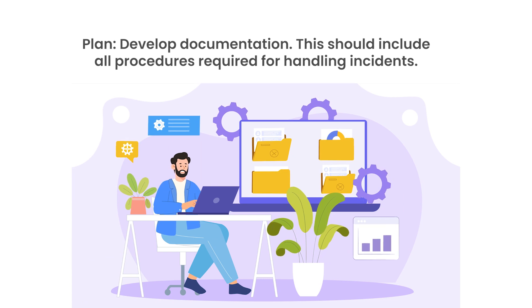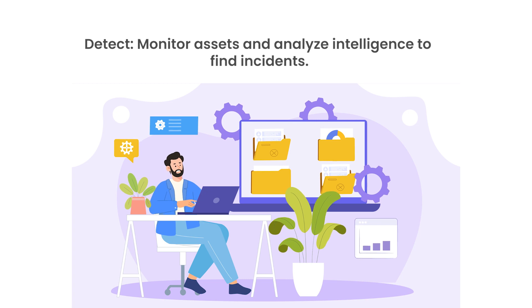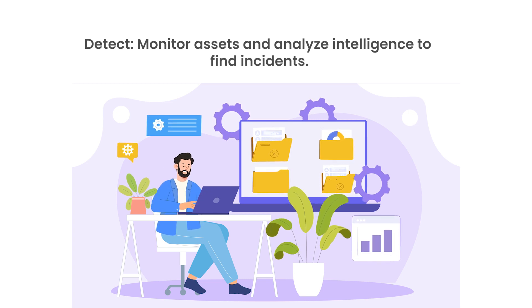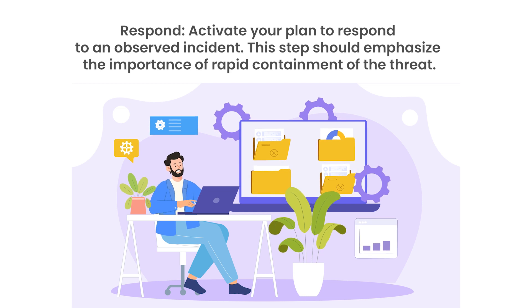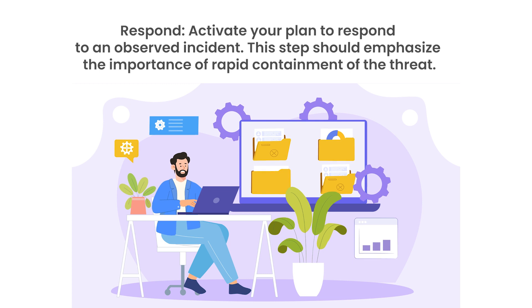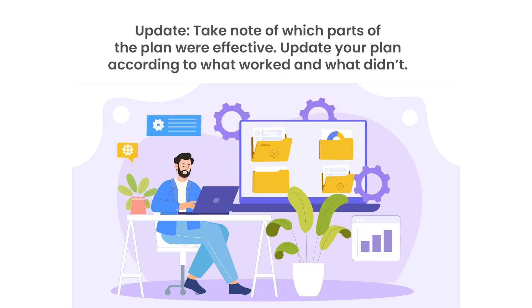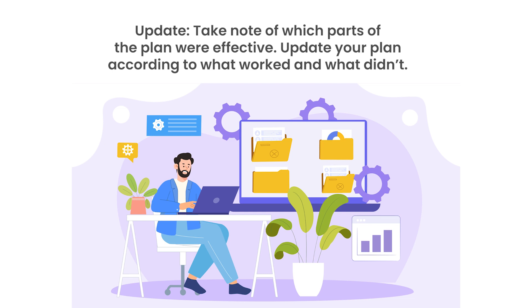The CIS Incident Response Template consists of the following. Plan: Develop Documentation — this should include all procedures required for handling incidents. Detect: Monitor Assets and Analyze Intelligence to Find Incidents. Respond: Activate your plan to respond to an observed incident; this step should emphasize the importance of rapid containment of the threat. Update: Take note of which parts of the plan were effective, and update your plan according to what worked and what didn't.